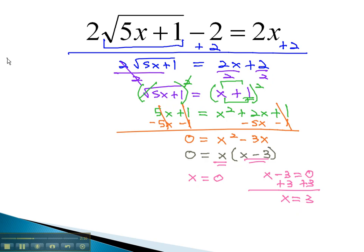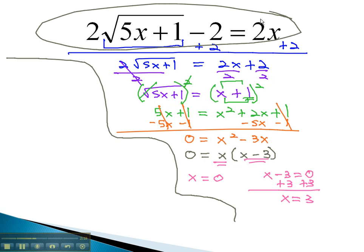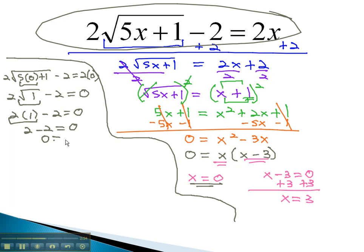However, because this problem had an even radical in it, we will want to check our answer first before we say these are our final solutions. Always check back in the original problem. 2 times the square root of 5x, let's test 0 first, plus 1, minus 2, equals 2x, or 2 times 0. 5 times 0 is 0, and so we're just left with 2 times the square root of 1, minus 2, equals 0. The square root of 1 is simply 1, 2 times 1 is 2, minus 2, and does, in fact, equal 0. This means this first answer of x equals 0 works in the original equation and so it is a solution to our problem.